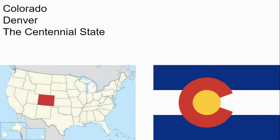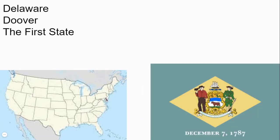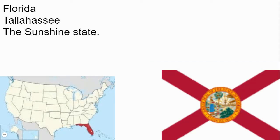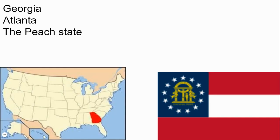The state is Colorado, the capital is Denver, and the nickname is the Centennial State. This state is Delaware and the capital is Dover — it was the first state to join the USA, joining on December 7, 1787. The state is Florida with the capital Tallahassee and the nickname the Sunshine State.